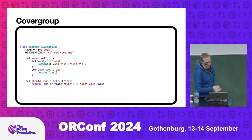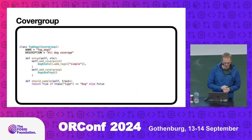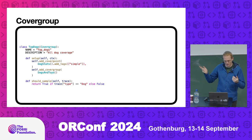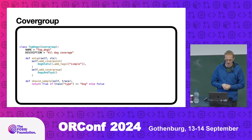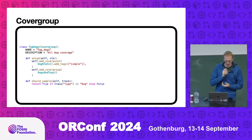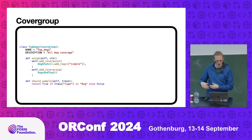Here's a cover group example — quite simple. There's a default name and description, which can be overridden when you instance it. Again, a setup function just to declare which cover points are included. Then there's the should_sample function, which is whatever criteria you like to decide whether it should be passing on the trace data to its children.